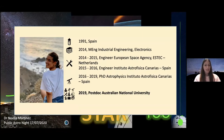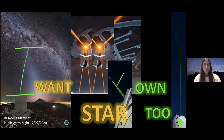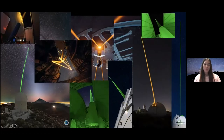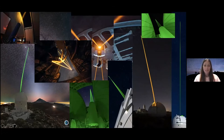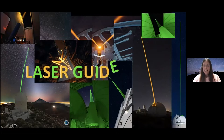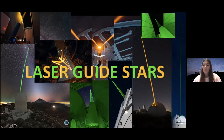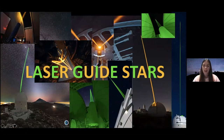What do all these pictures have in common? Well, they show lasers that we're going to use to create our own stars. This is what we call laser guide stars — artificial stars that we can generate wherever we want in the sky. In order to understand what a laser guide star is and how this works, we are going to start our journey from the beginning.